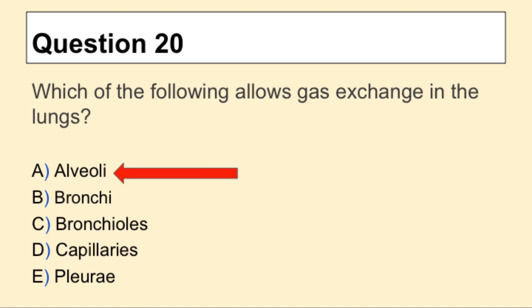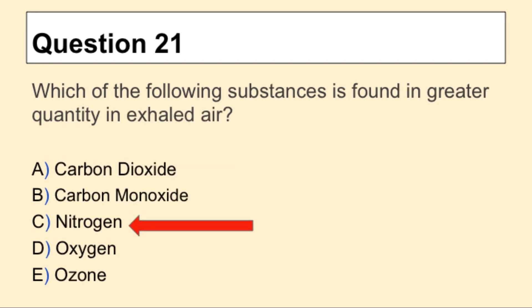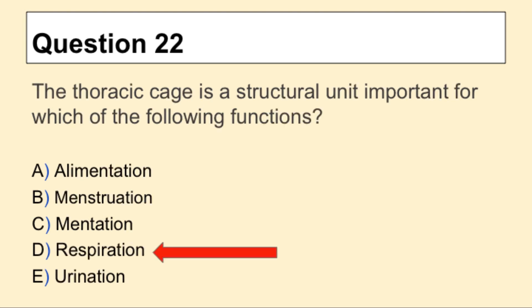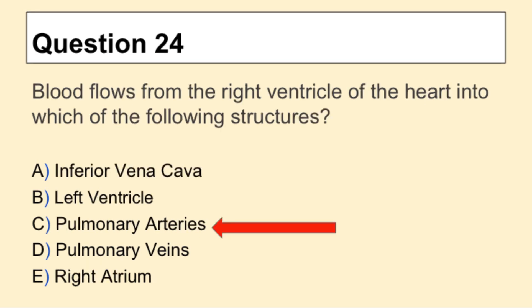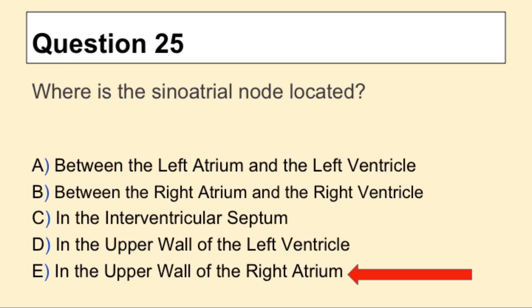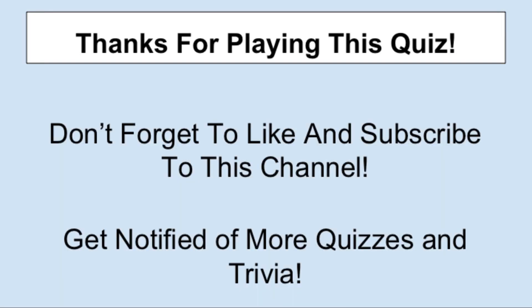Question 20: the answer is A, alveoli. Question 21: the answer is C, nitrogen. Question 22: the answer is D, respiration. Question 23: the answer is D, pulmonary veins. Question 24: the answer is C, pulmonary arteries. Question 25: the answer is E, in the upper wall of the right atrium.